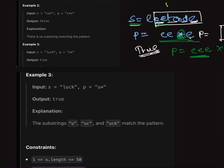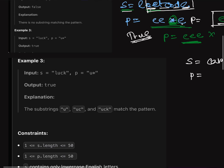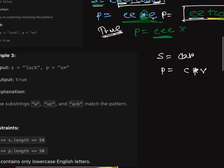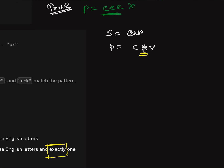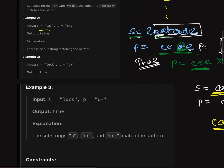For example 2, the string s is 'car' and the pattern string p is 'c*v'. We check if after replacing the star with any character, the final string p is a substring of s. If we replace with empty, p becomes 'cv' — not present. You can check all possible combinations and there is no valid substring. So we return false.